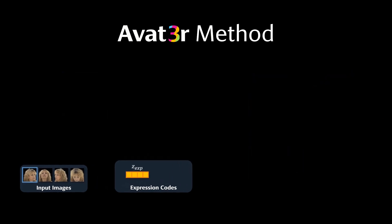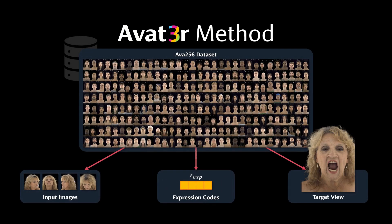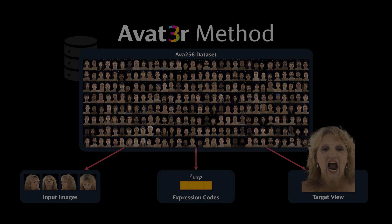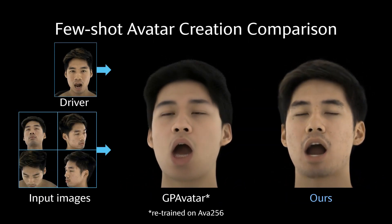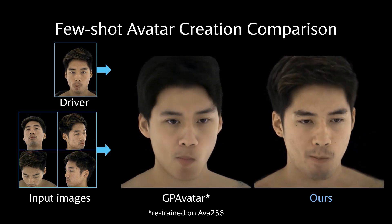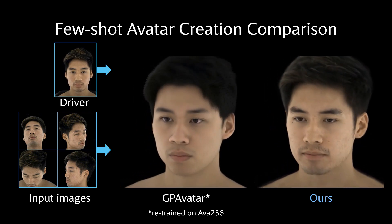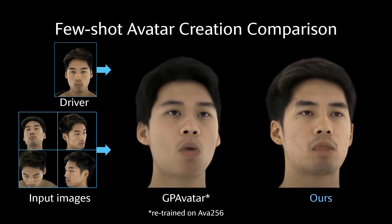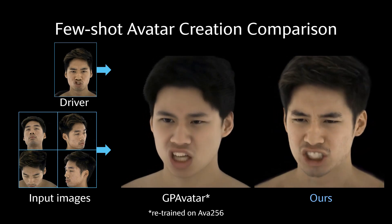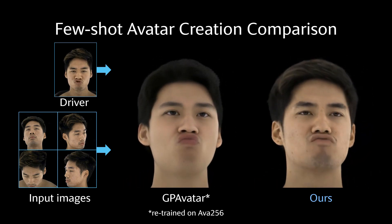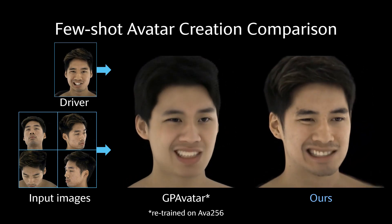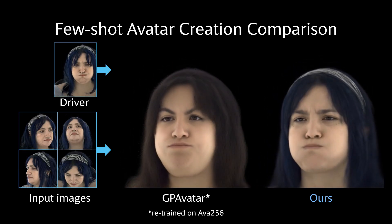To train Avatar, we require four input images and one image for supervision with its corresponding expression code, all taken from AVA256, a large multi-view video dataset of human heads. We compare our method with GP Avatar for avatar creation from four input images. The avatar generated by our method better resembles the target person, and our renderings are fully 3D consistent and free from temporal flickering.